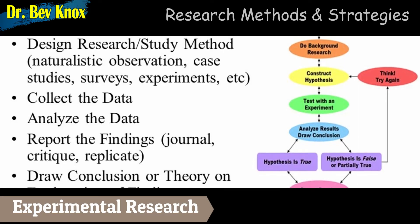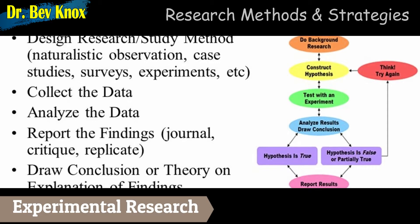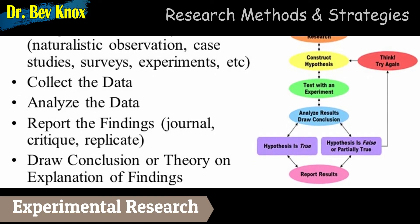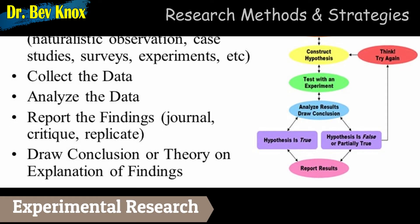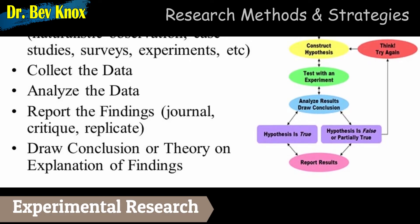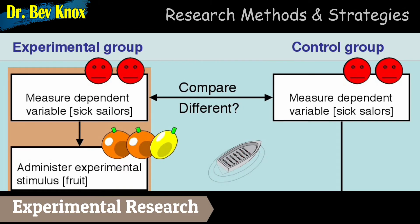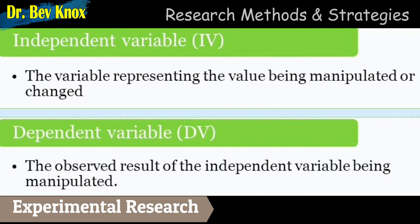One group will receive some special treatment — the manipulation implemented by the experimenter — and the other group will receive either no treatment or a different treatment. Any group that receives a treatment is called an experimental group. A group that receives no treatment is called a control group. In some experiments there are multiple experimental and control groups, each of which is compared to the other.